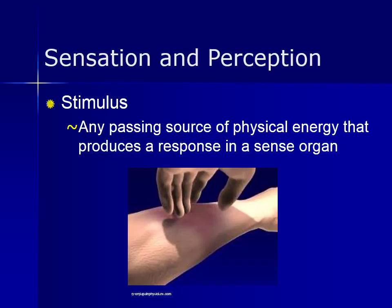Sensation refers to the process of sensing our environment through touch, taste, sight, sound, and smell. This information gets sent to our brains in raw form where perception then comes into play. Perception is the way we interpret these sensations and therefore makes sense of everything around us.